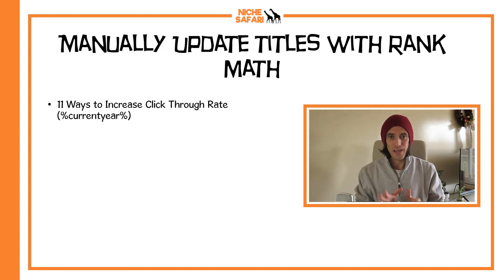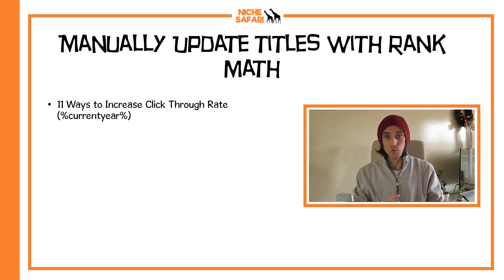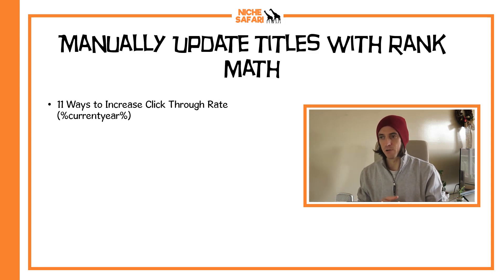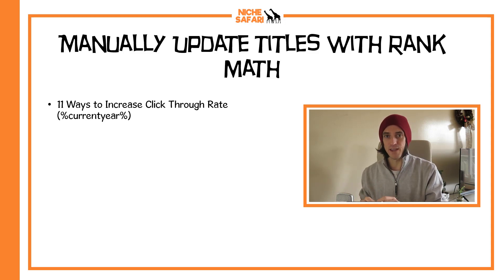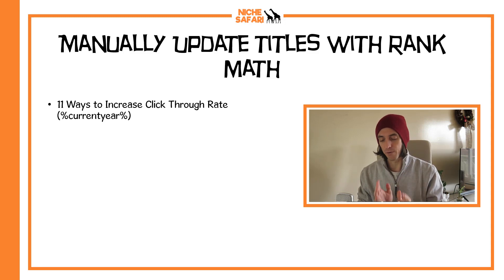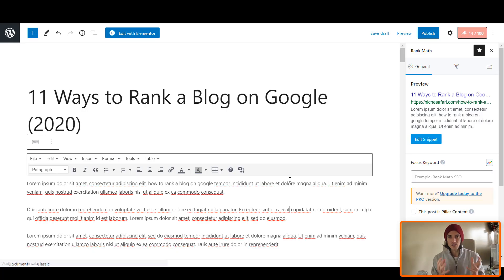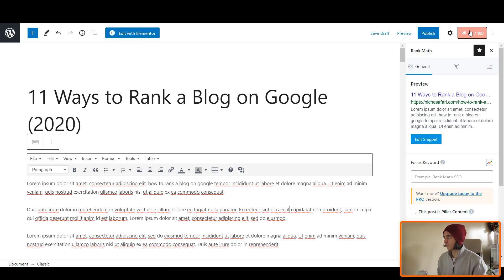So this is what it's going to look like. It's going to look like this: '11 ways to increase click-through rate' and then in brackets, percent current year percent. That's what we're going to do in Rank Math. Make sure you've got Rank Math installed. So let's go over and have a look now.